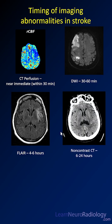There are corresponding abnormalities on CT in about that same time frame. It's a little bit less sensitive than MR, but here you can see that same patient with loss of gray-white differentiation in the insula and a little bit of swelling there.